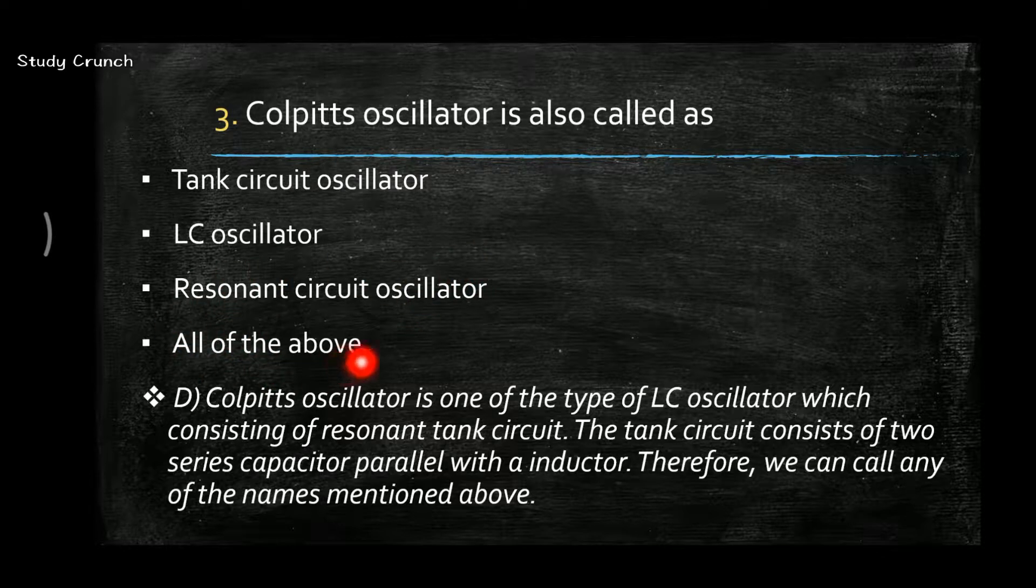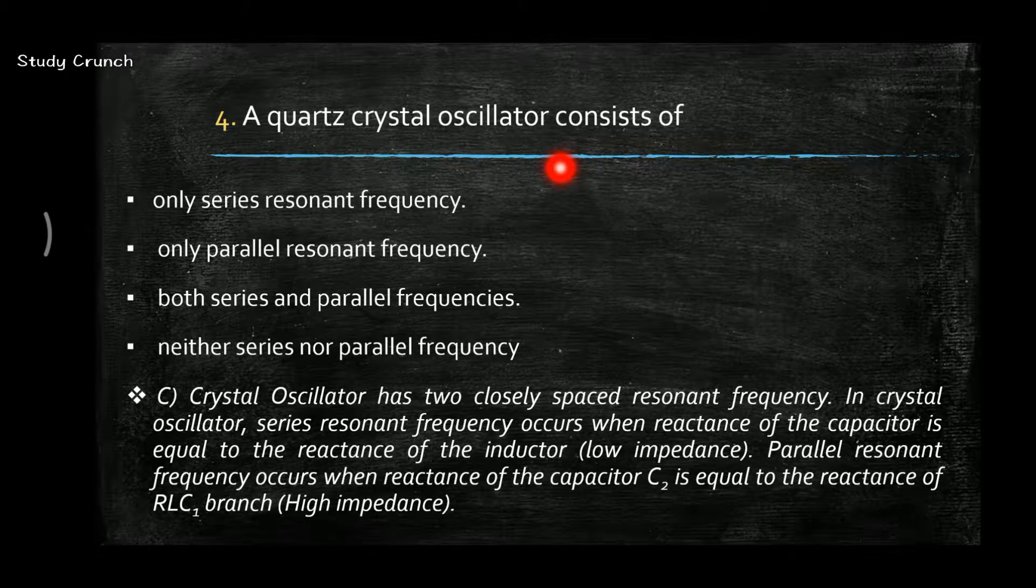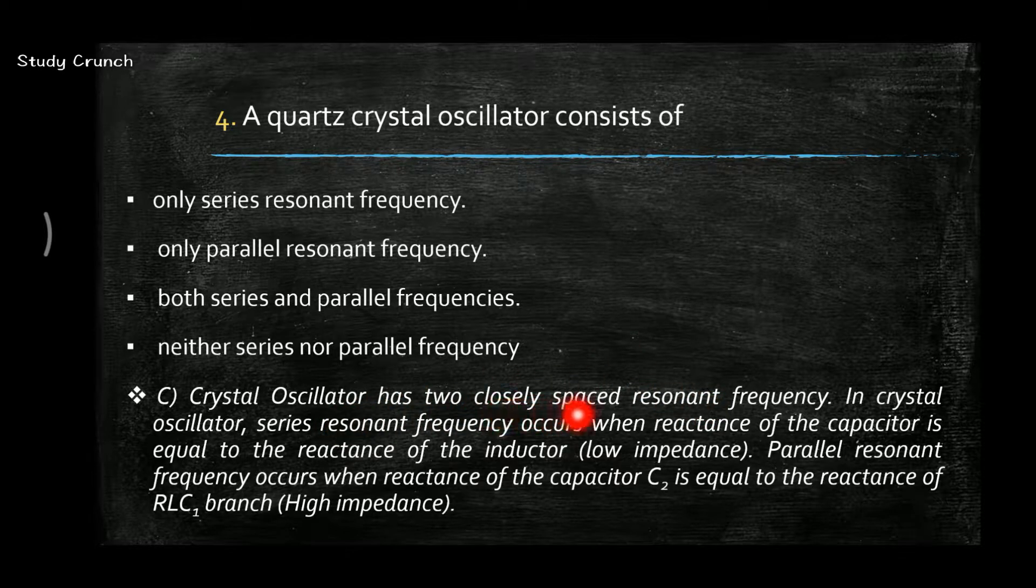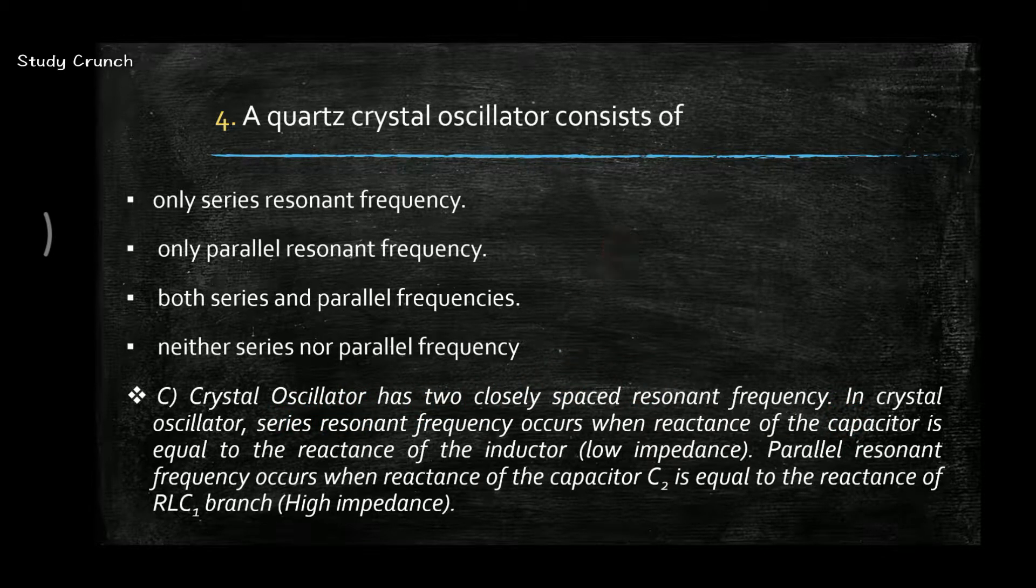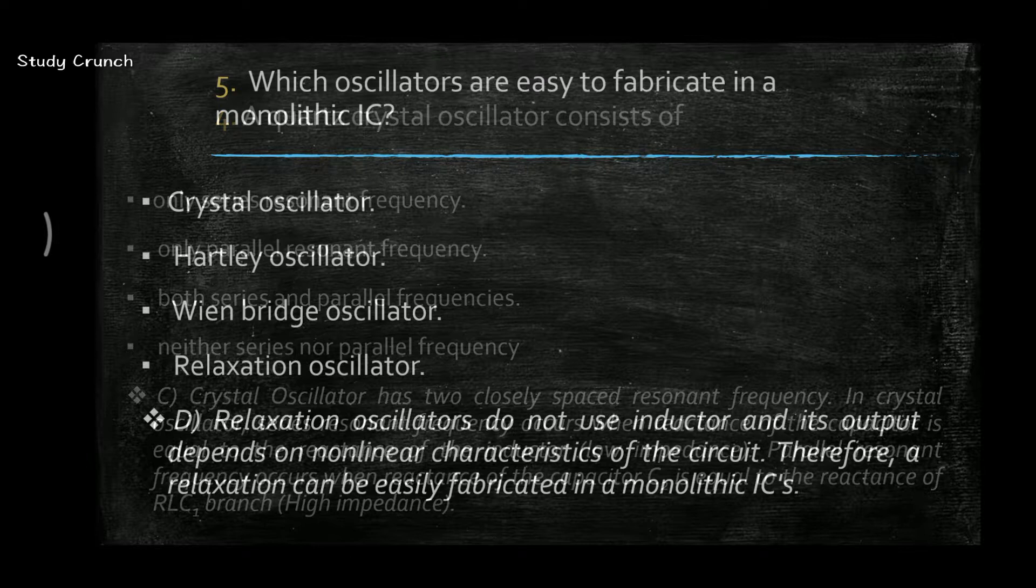Next, a quartz crystal oscillator consists of: option is C, that is both series and parallel frequencies. Because we know that crystal oscillator has two equally spaced and closely spaced resonant frequencies. In crystal oscillator, the series resonant frequency occurs when the reactance of the capacitor is equal to reactance of the inductor. The parallel resonant frequency occurs when the reactance C2 is equal to the reactance of RLC1 branch.